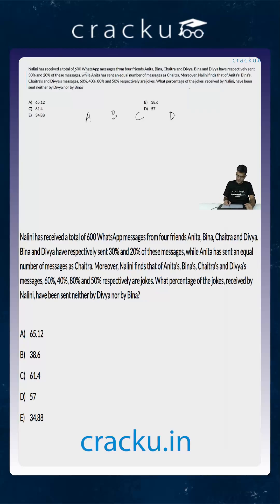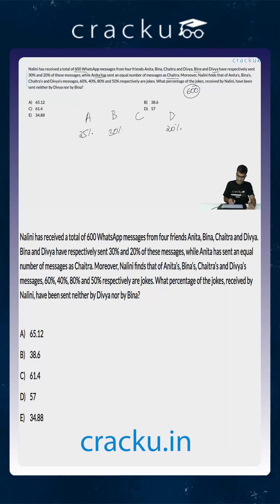The total number of WhatsApp messages received are 600, out of which Bina and Divya sent 30% and 20%. So these two together have sent a total of 50%. It is told that Anita has sent an equal number of messages as Chaitra, so Anita has sent 25% and Chaitra has sent 25%. The total is 25 plus 30 plus 25 plus 20, which is 100%.